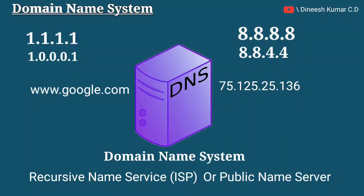We will go to the DNS. We will start using the URL. We will go to the URL. We will go to the IP address. We will use the DNS. We will go to the DNS. We will do this — it can be very complicated.